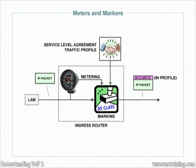A meter is on an input for a particular user and possibly for a particular class of traffic. It measures the bandwidth of what that user is sending in. And if the meter starts going above where it's supposed to be — in other words, they're violating their traffic profile — the output of the meter feeds into the marker.